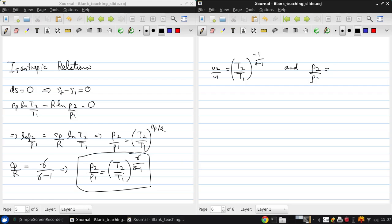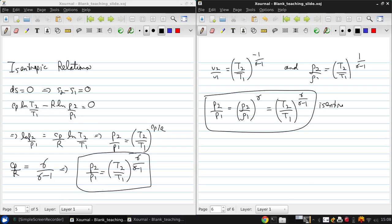And also, therefore, rho2 over rho1 is t2 over t1 to the 1 over gamma minus 1, for any isentropic process for perfect gas.